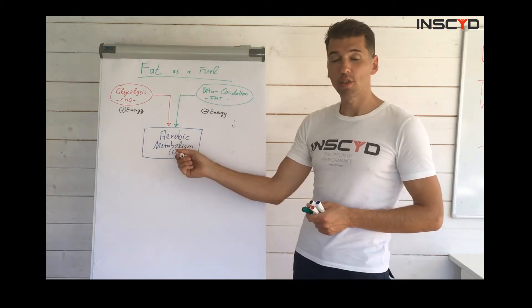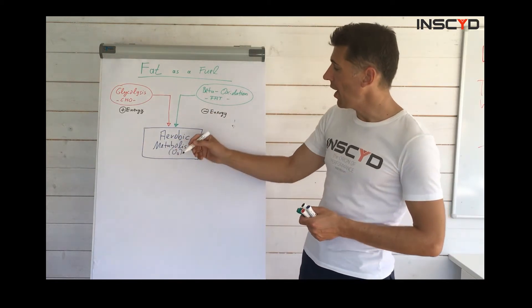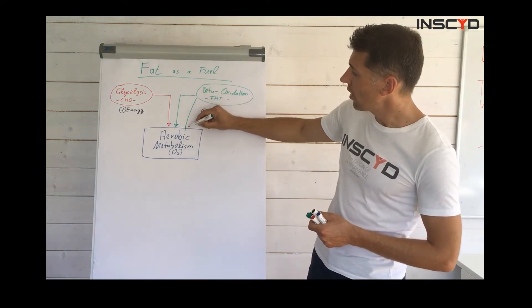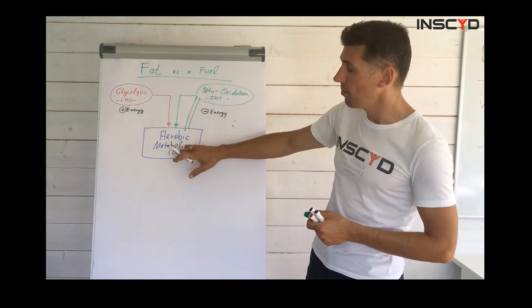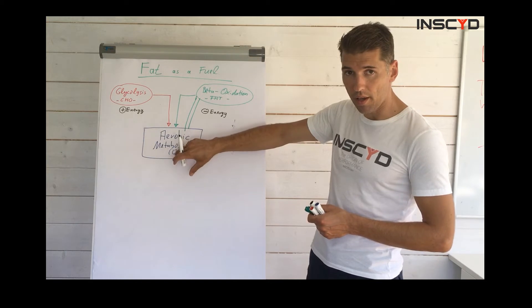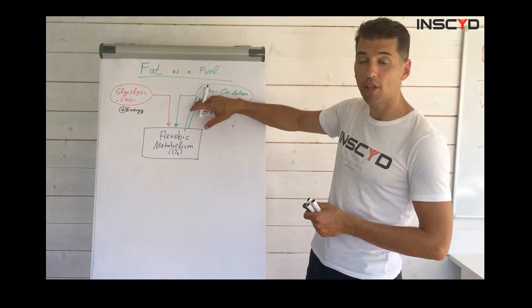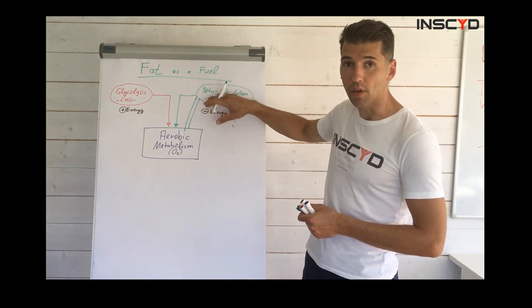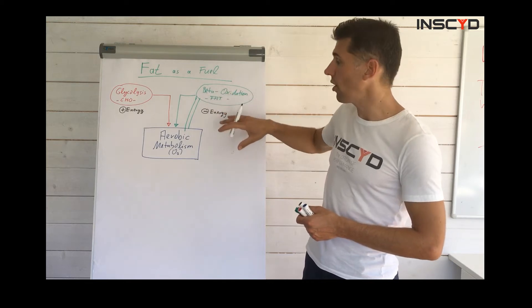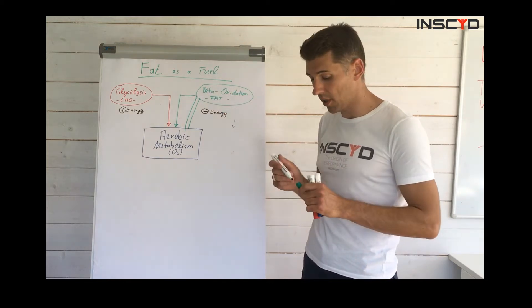So, what this system does, before it produces the fuel for the aerobic engine, it demands energy transfer from the aerobic engine to the beta-oxidation in order to prepare the fuel. So, there's additional oxygen need. That's the first thing important to note.